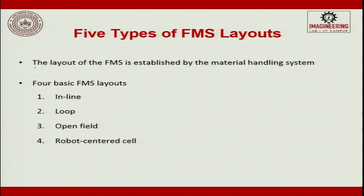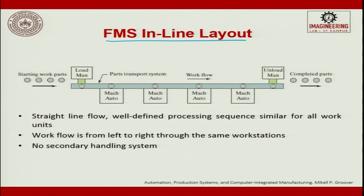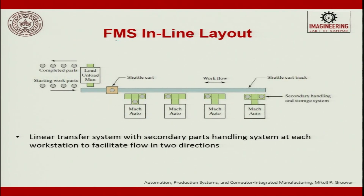There are five types of FMS layouts, established by the material handling system. The FMS inline layout has work parts lined up at a loading station, then a conveyor flows through machine 1, machine 2, machine 3, machine 4 in sequence with the option of bypassing a station. It is a straight-line layout with a well-defined processing sequence similar for all work units, work flowing left to right through the same workstations, and no secondary material handling system involved.